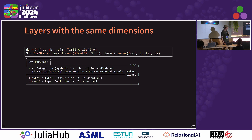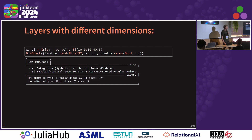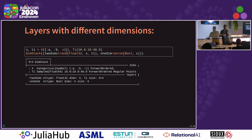So we can define a DimStack using layers with the same dimensions. Here we just define a name tuple of arrays and then pass in X and time dimensions. So we've got two arrays — layer 1 and layer 2 — with the same dimensions. But we can also use different dimensions, so we can have an object with mixed dimensionality that we can still index into. Here we have two dimensions for one of the arrays and one dimension for the other. And this is actually quite common in NetCDF where you have layers that have X and Y spatial dimensions and then another dataset that has a time dimension as well.